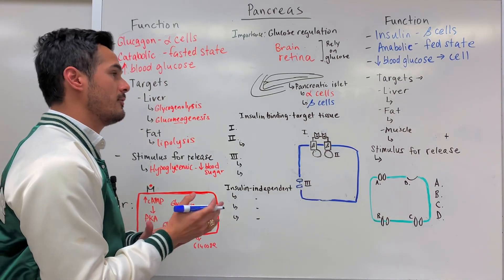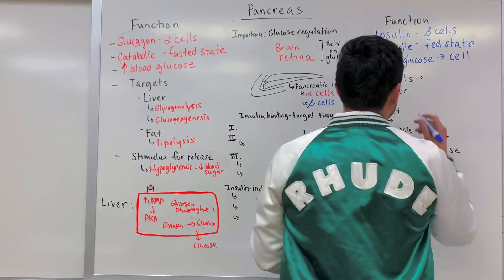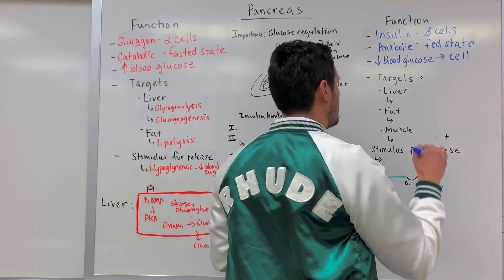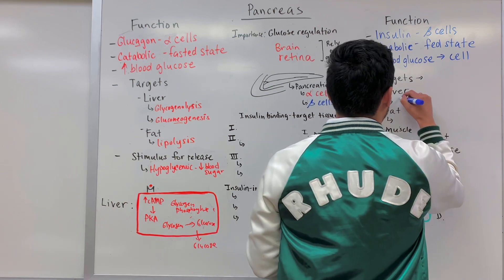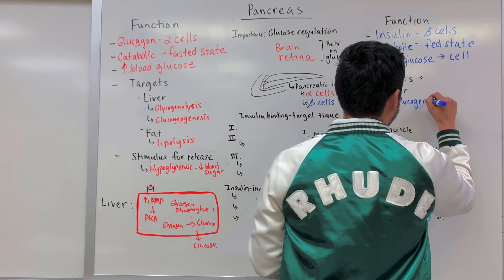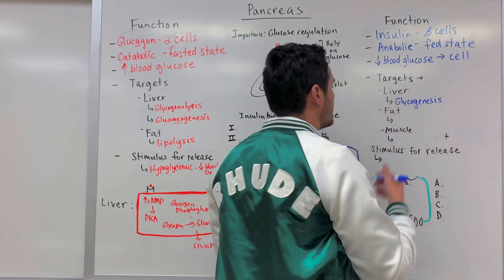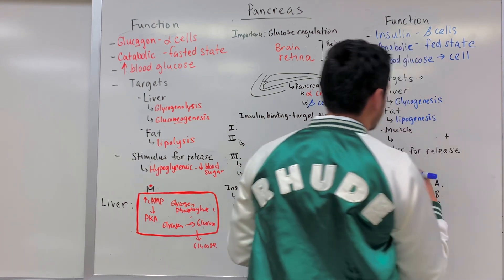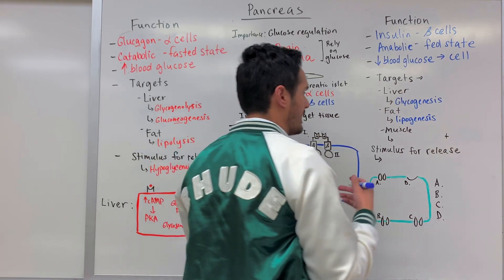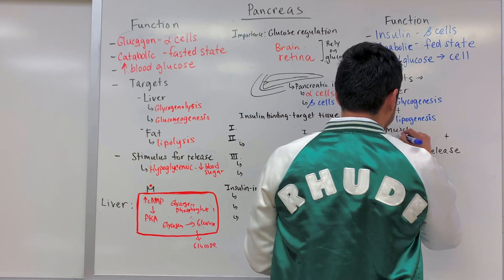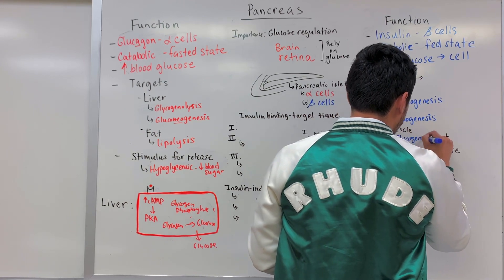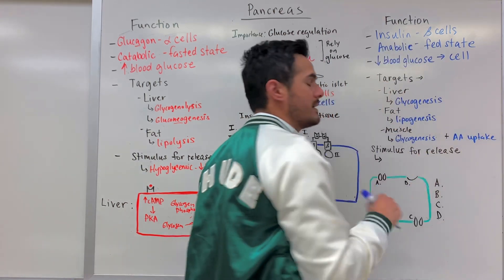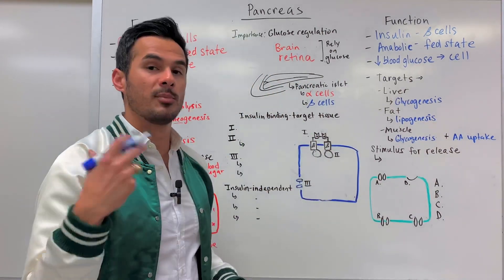The targets for insulin include the liver, fat cells, and muscle cells. Within the liver, glycogenesis occurs — we're making more glycogen. Within the fat cells, lipogenesis occurs — all the excess glucose can be stored as fat, as triglycerides. Within muscle, we have glycogenesis as well as amino acid uptake, increasing the uptake of amino acids for protein synthesis.